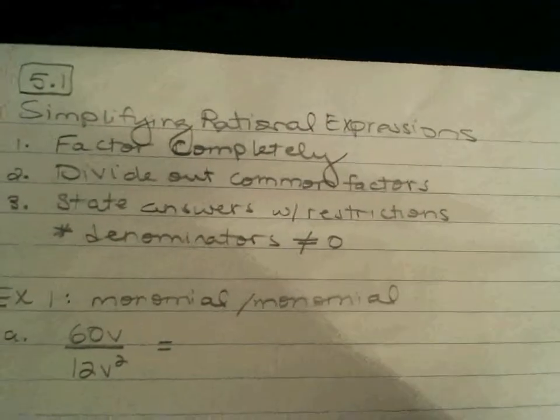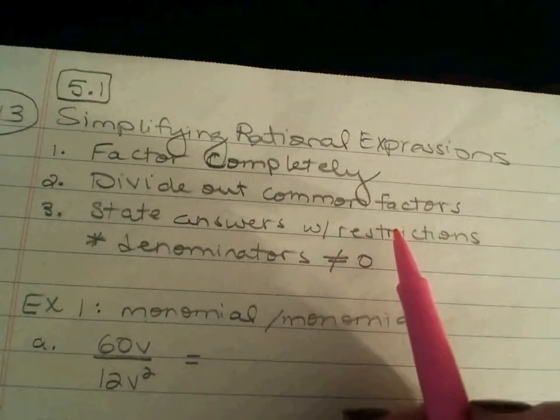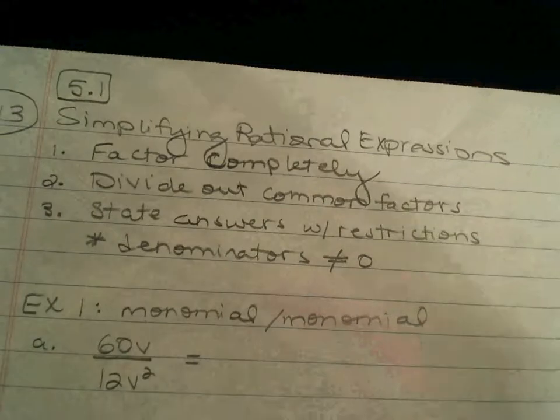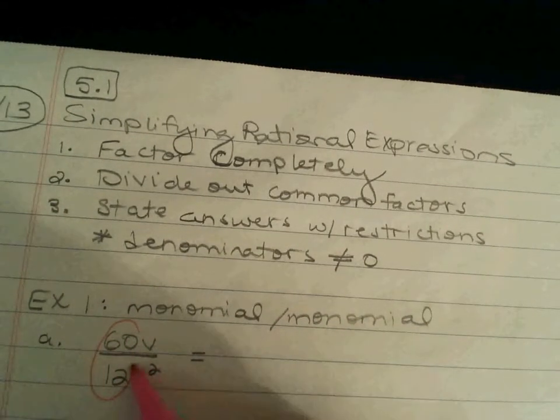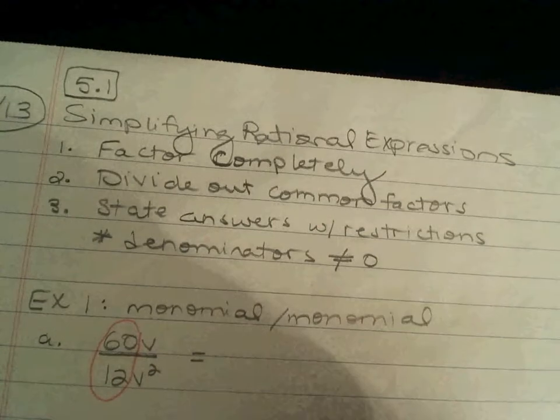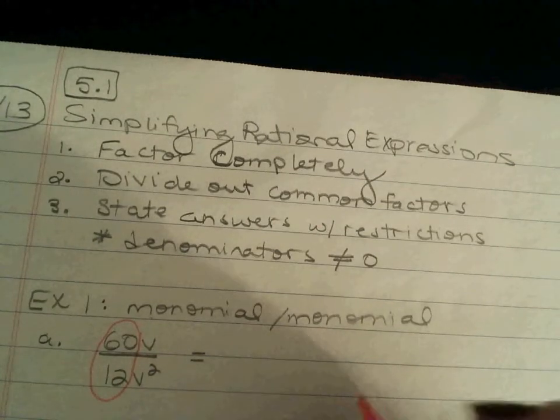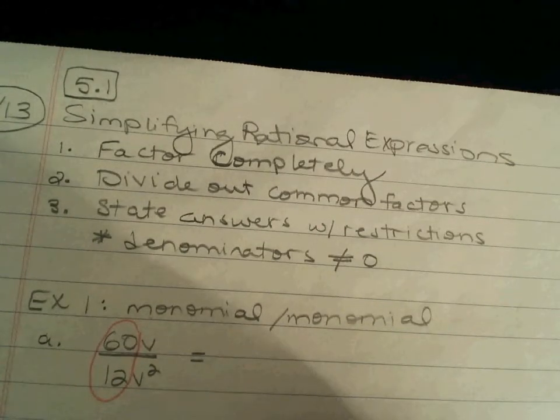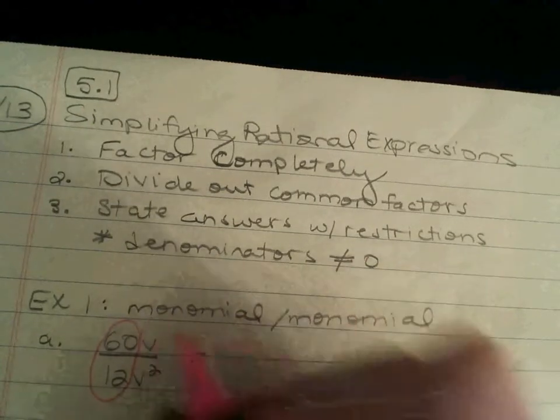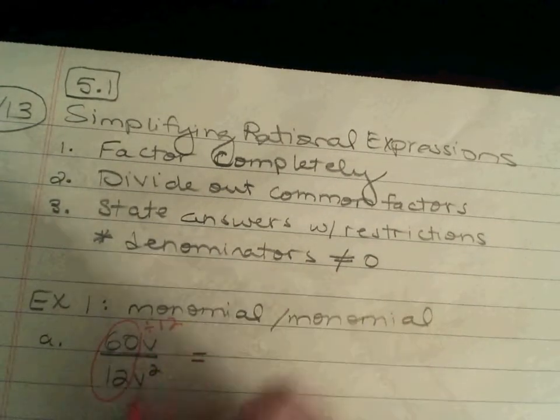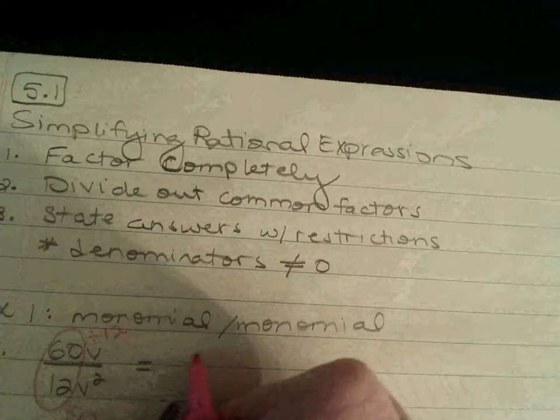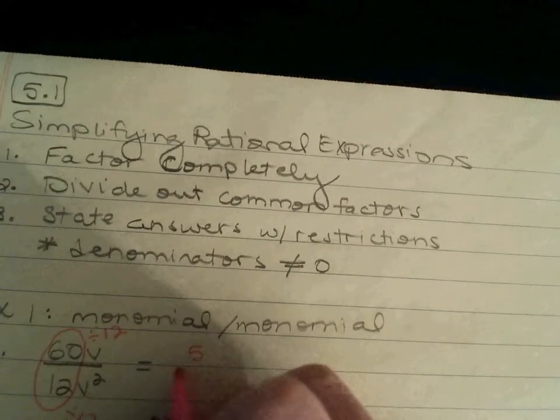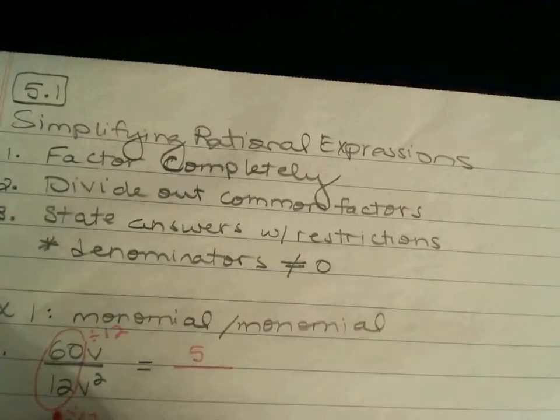Step two, divide out common factors. So, again, just like we did in the opener, what do 60 and 12, what is their greatest common factor? This is where knowing your multiplication facts come in handy. 12, you're right. So, divide numerator and denominator by 12. 60 divided by 12 is 5. And 12 divided by 12 is 1.